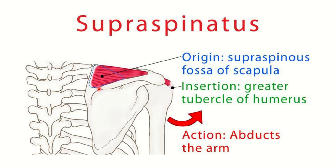This is the spinous process of the scapula, or spine of the scapula. Above the spine of the scapula is the supraspinatus fossa, and below it is the infraspinatus fossa. Our supraspinatus muscle originates from the supraspinatus fossa and inserts into the greater tubercle of the humerus.